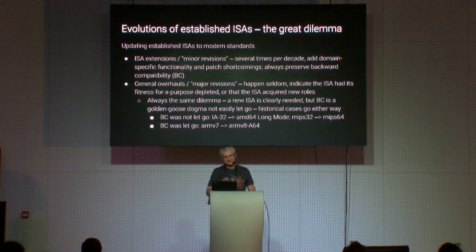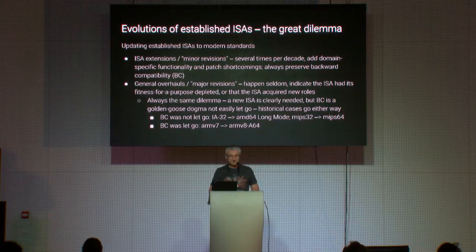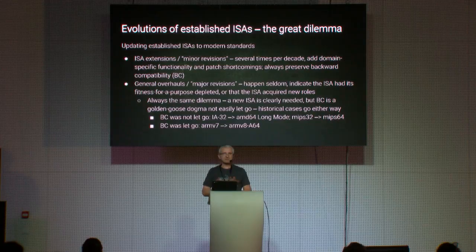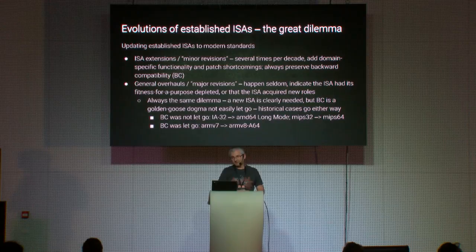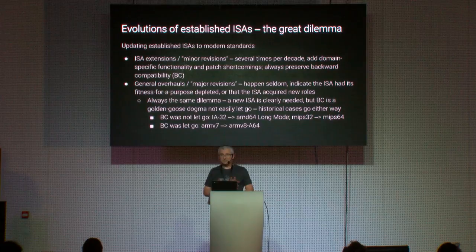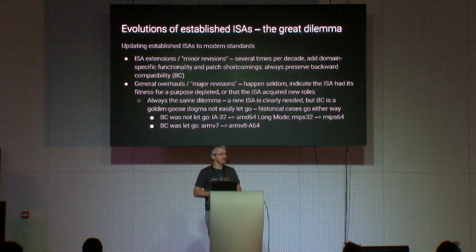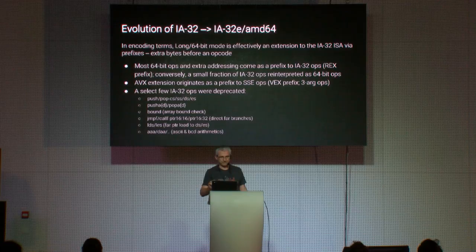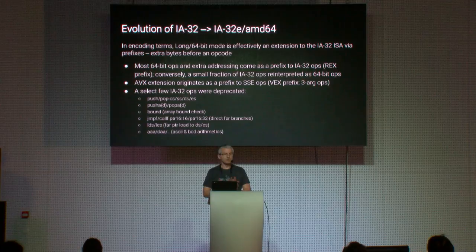Examples preserving backward compatibility include the transition of Intel Architecture 32 to its 64-bit version, and the transition from MIPS 32-bit to MIPS 64-bit — both largely preserved binary compatibility. An example of the opposite is the transition from the last 32-bit ARM architecture to the first 64-bit ARM architecture, where backward compatibility was completely abolished — there is no backward compatibility between the two.